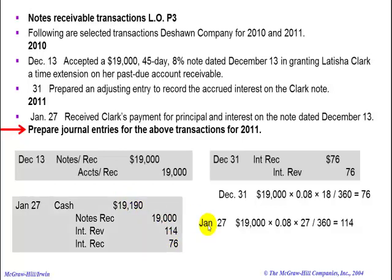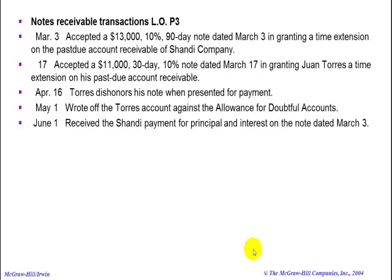The calculation for interest from the beginning of January until the 27th would be $19,000 times 8% times 27 over 360 days, which equals $114. And we're done with this piece, but we still have more transactions in 2011.